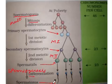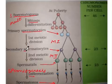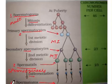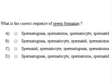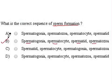So the sequence is: spermatogonia as the first stage, then primary and secondary spermatocytes as stage 2, spermatids as stage 3, and spermatozoa as stage 4. In the given option, spermatogonia, then spermatocytes, spermatids, and spermatozoa gives us the correct sequence. So B is the correct answer.